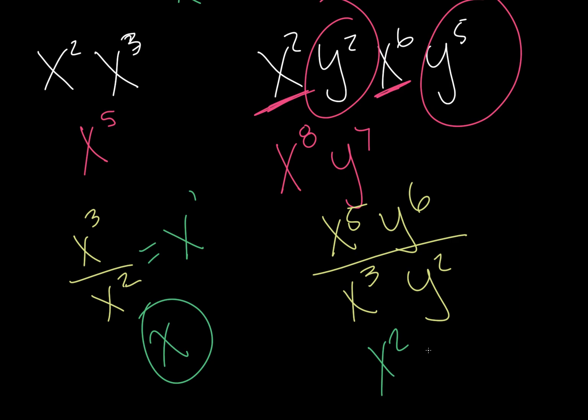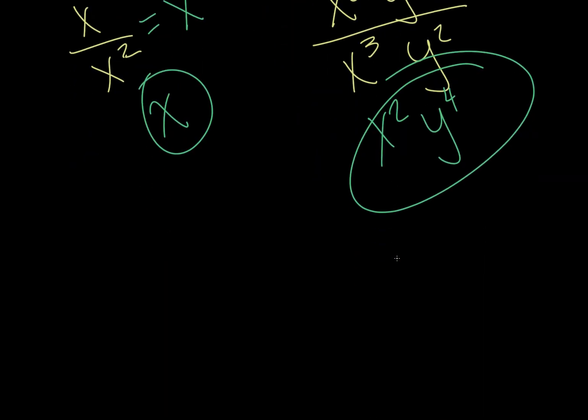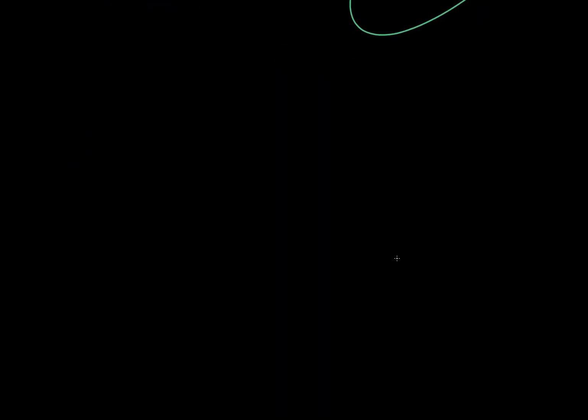Right here, we get x squared, because 5 minus 3 is 2. And then 6 minus 2 is 4. So we get x squared, y to the 4.